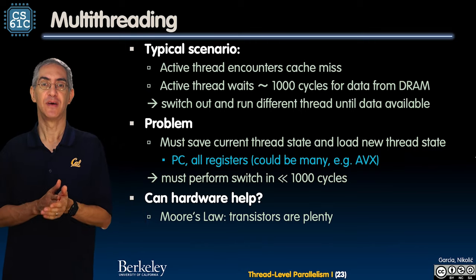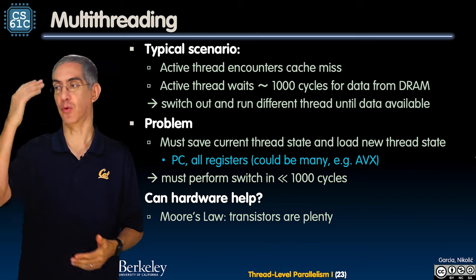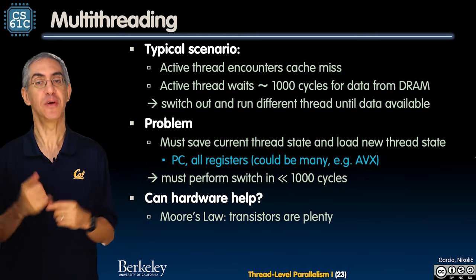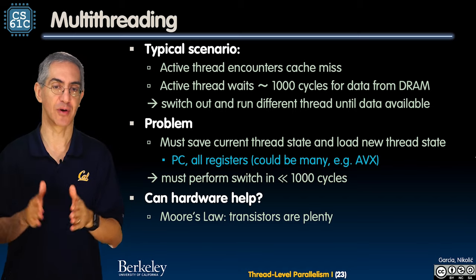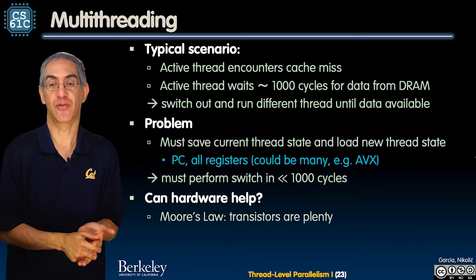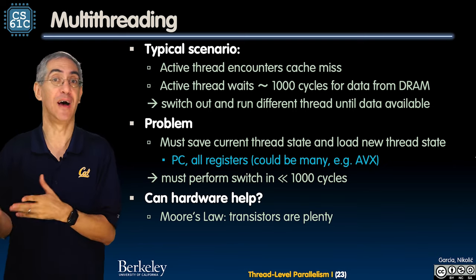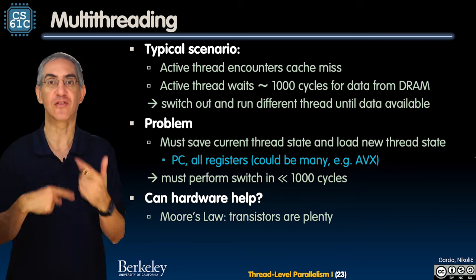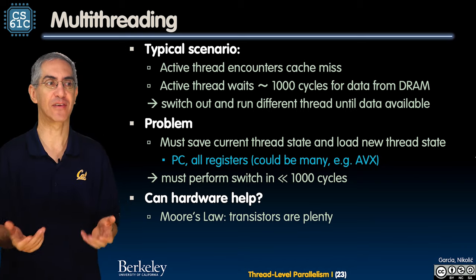In a typical scenario, an active thread is working and you get a cache miss. You have to wait a thousand cycles to go to DRAM — we know this already. We'll switch this out and different threads will run until the data is available. But we've got to save the current thread state and load a new thread state. The PC registers and AVX registers could be a lot to save, and you've got to perform that switch within a thousand cycles. How does that even work?